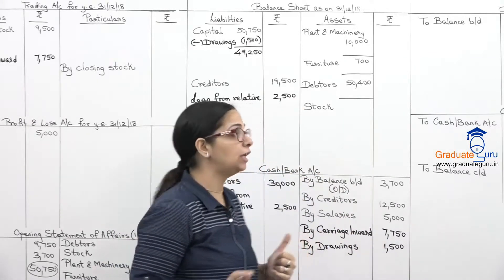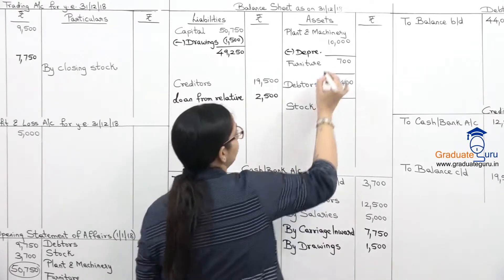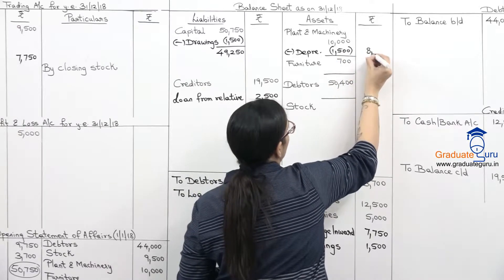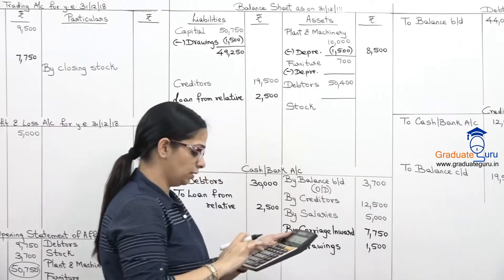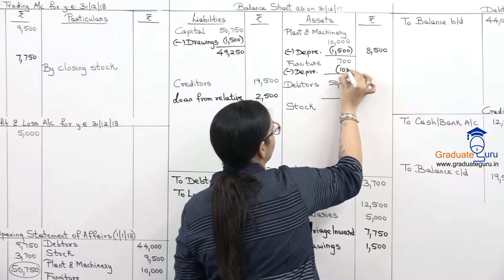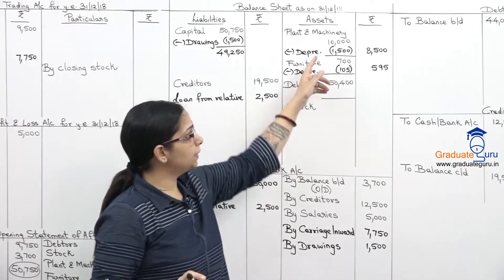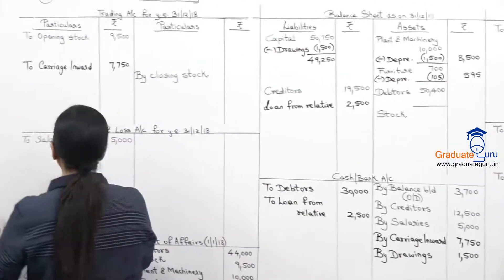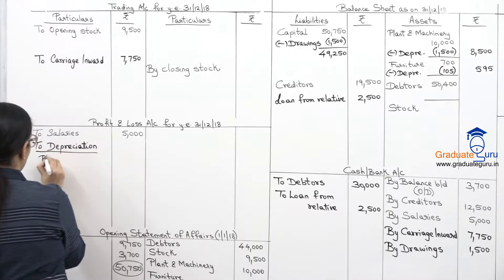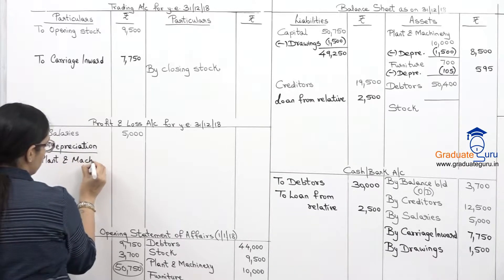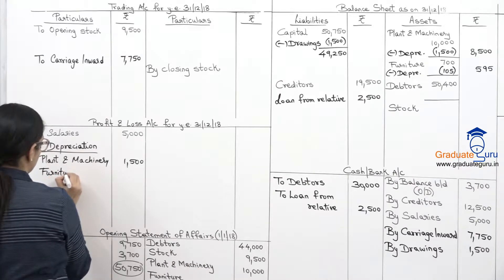Now we process depreciation on assets at 15%. Plant and machinery: 10,000 × 15% = 1,500, leaving net book value of 8,500. Furniture: 700 × 15% = 105, leaving net book value of 595. Both depreciation amounts are recorded on the expense side of P&L — plant and machinery 1,500 and furniture 105 separately.